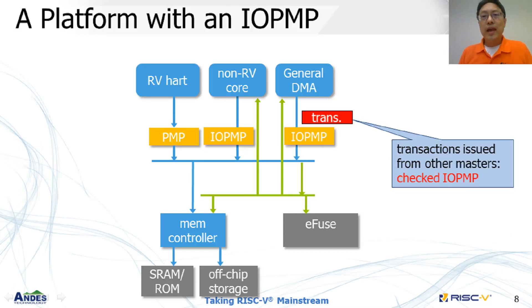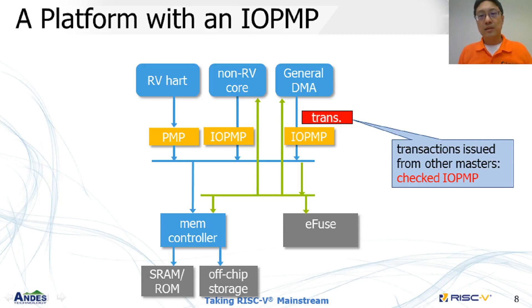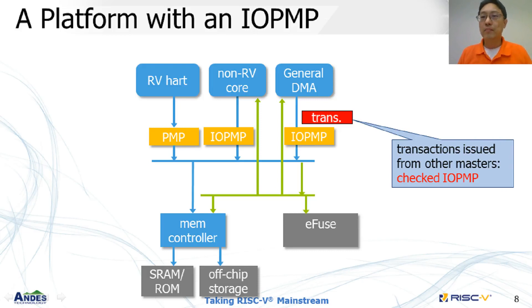If we have an IOPMP in each path before any transaction reaching its destination, we can enforce a permission check. Suspicious transactions then can be detected. By checking back the transaction information, the malicious behavior and program can be identified and further can be stopped.